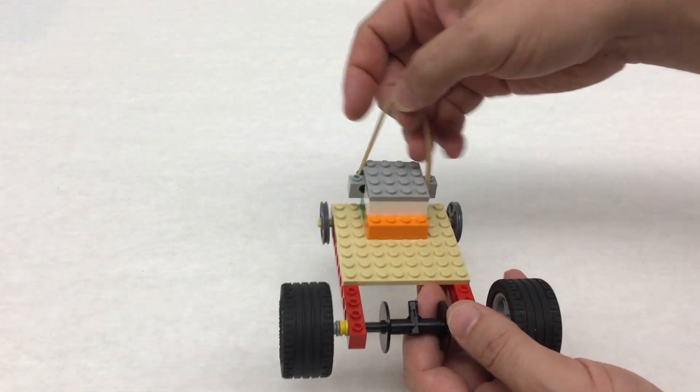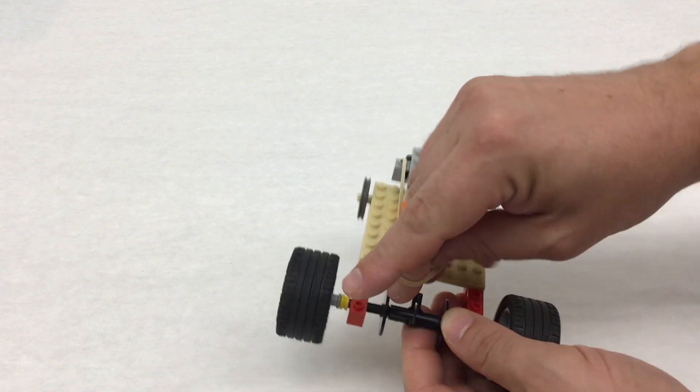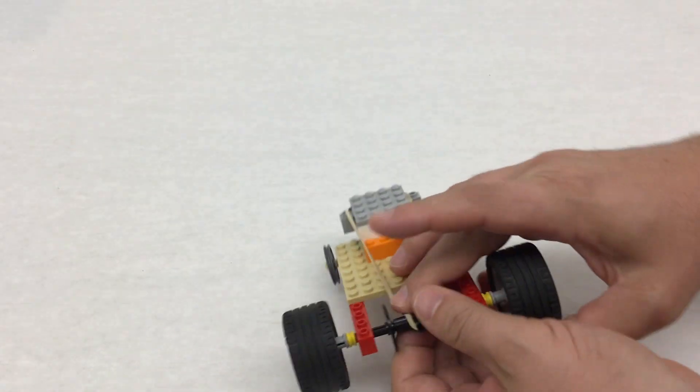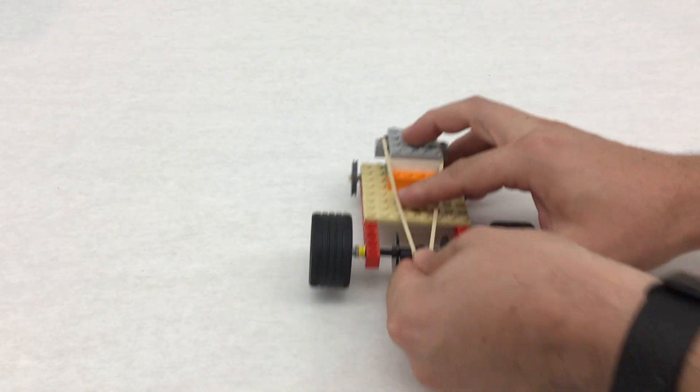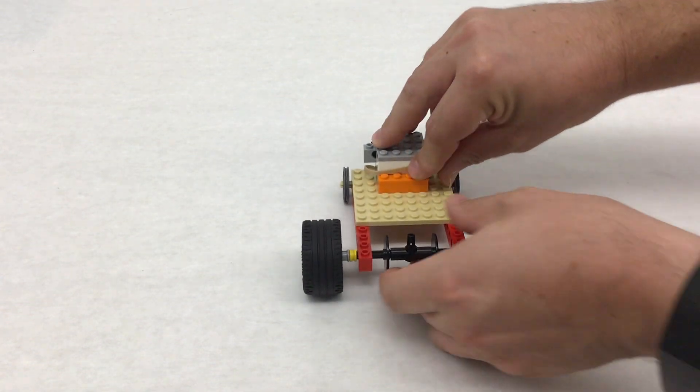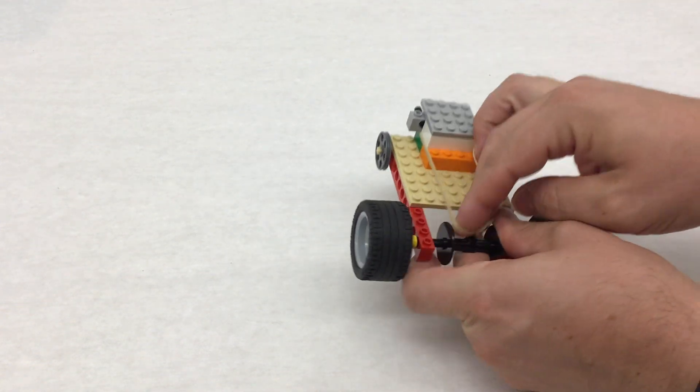So one more time: secure the rubber band to the front of the car, attach it to the back of the car, and then whatever method you're going to use to wind up, just keep that method consistent throughout the duration of your rubber band car.